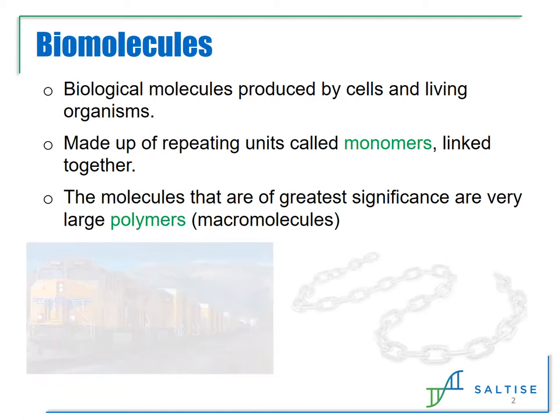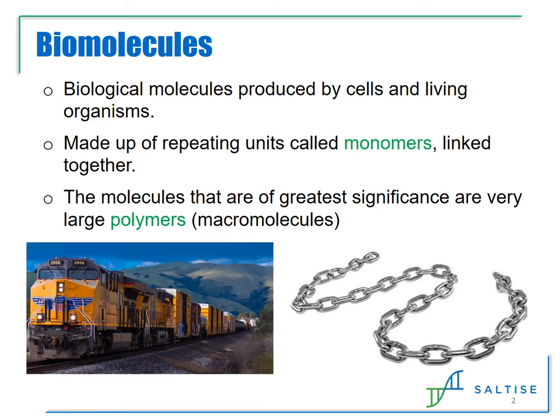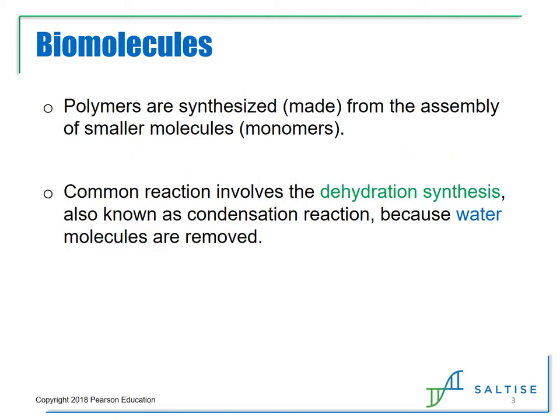You can think of these polymers as a strong chain made from connecting metal links together, or a train of connected freight cars. The polymers in this video are made from monomers linked together through a chemical reaction known as a dehydration synthesis. Whenever monomers are linked together, new covalent bonds are formed and water molecules are removed in the process. For this reason, the reaction is also known as a condensation reaction.